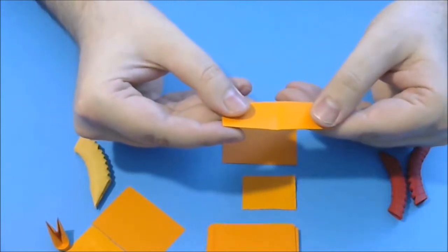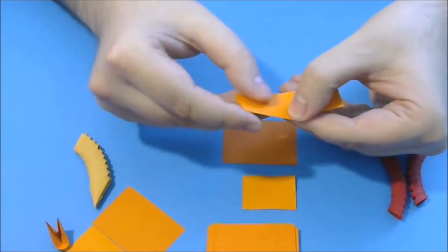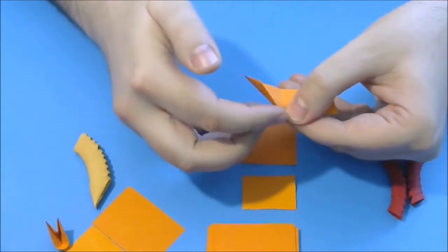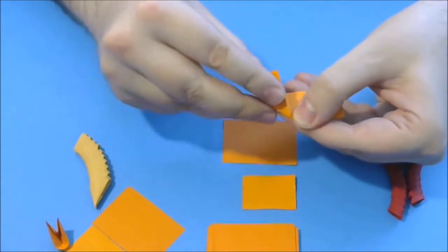Now, the third step, we will bring this part of the paper to the folding line in the middle, like this.